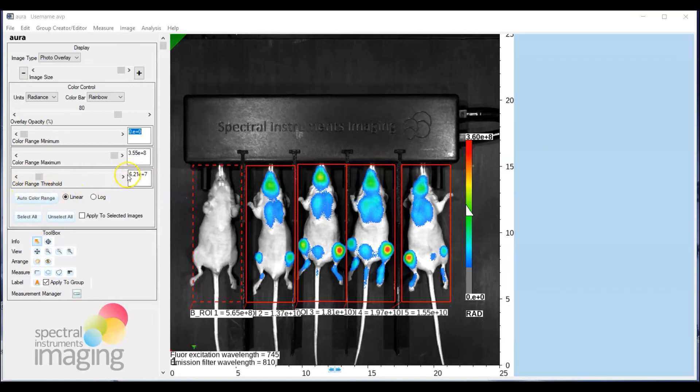So simply take the threshold value and have that be now the color range minimum of your calibration bar. And you can do that by simply typing it in.